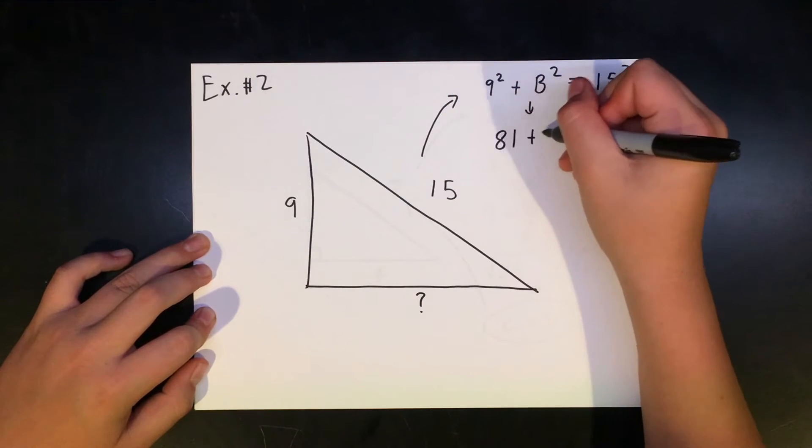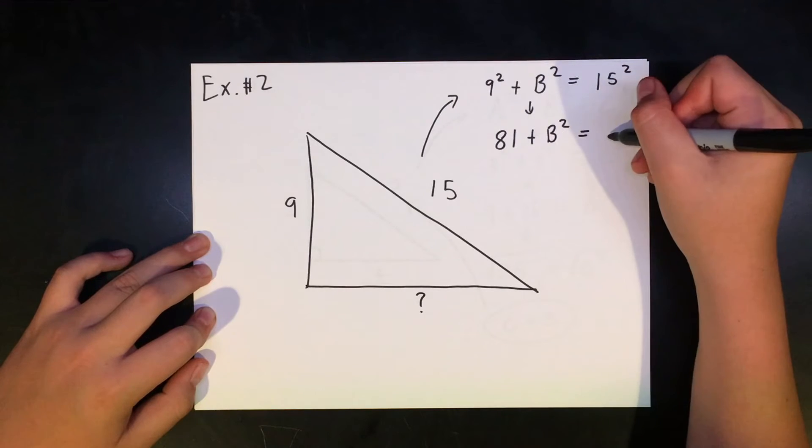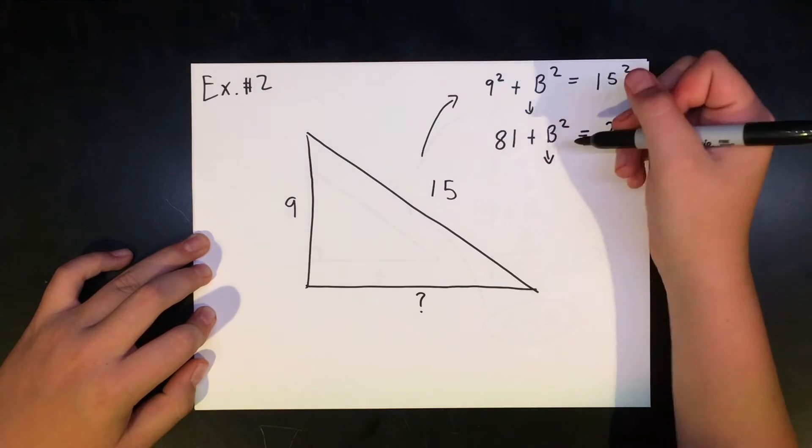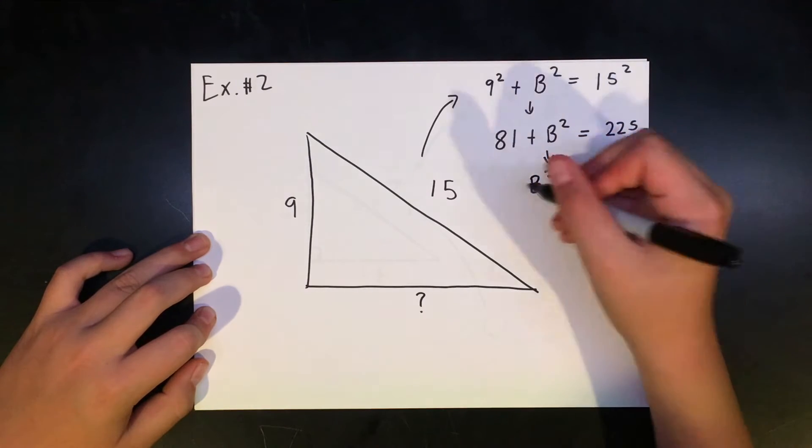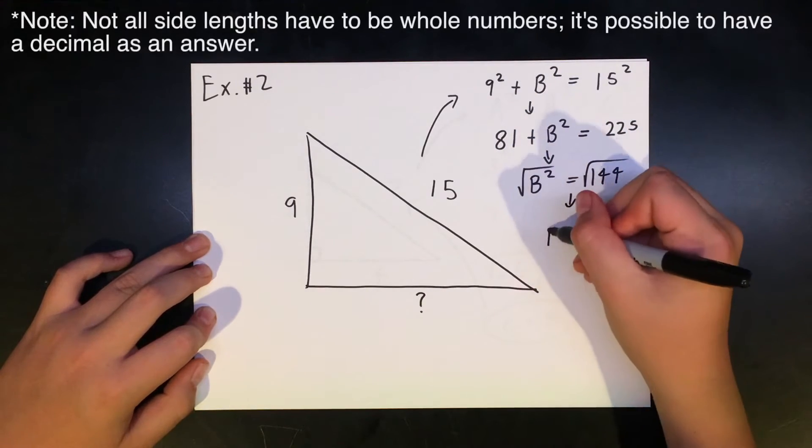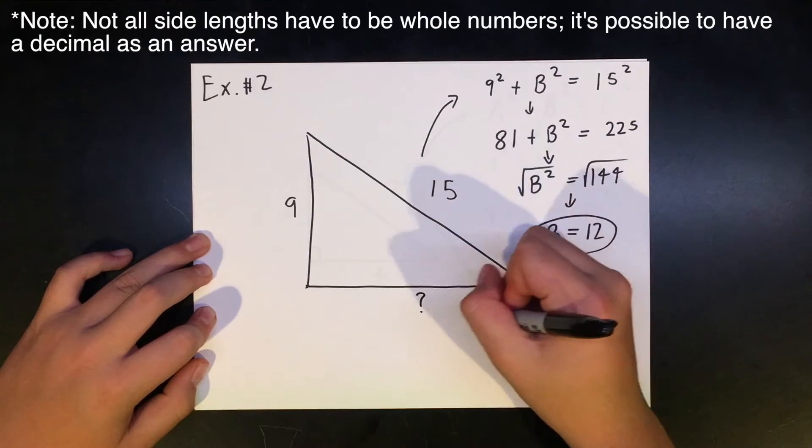We write out each square that we can do to get 81 plus b squared equals 225. We would then subtract 81 from both sides to get 144. And 144 has a square root of 12, so the side lengths of the right triangle are 9, 12, and 15.